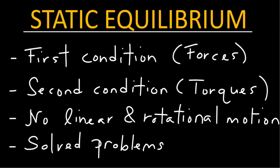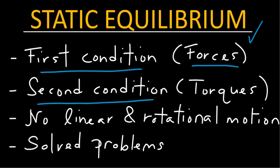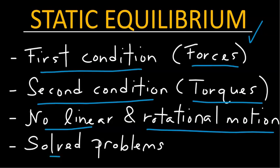In this video we will talk about static equilibrium. We will define the first condition for static equilibrium associated with forces acting on a system, and we will define the second condition associated with torques acting on a system. These two conditions arise from the fact that a system in static equilibrium has no linear and rotational motion. Finally, we will solve a few problems to highlight the concepts presented.